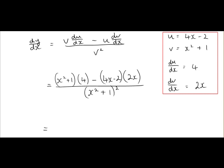Next, we complete our multiplication. So we have x² plus 1 by 4, so x² by 4 gives us 4x². Plus 1 by 4 gives us plus 4. Next, we've minus 4x minus 2 by 2x, let's put in our minus and we'll multiply out. So 4x by 2x gives us 8x². Minus 2 by 2x gives us minus 4x.